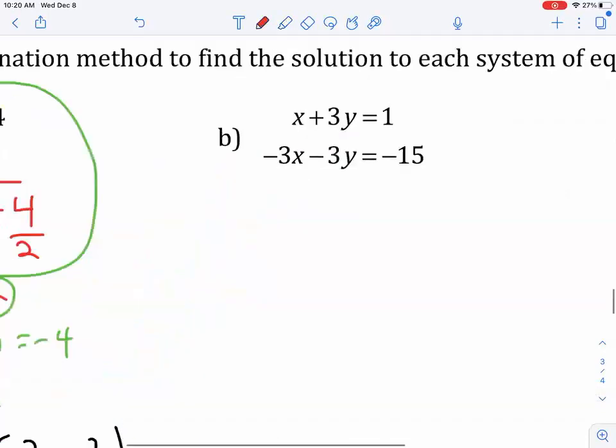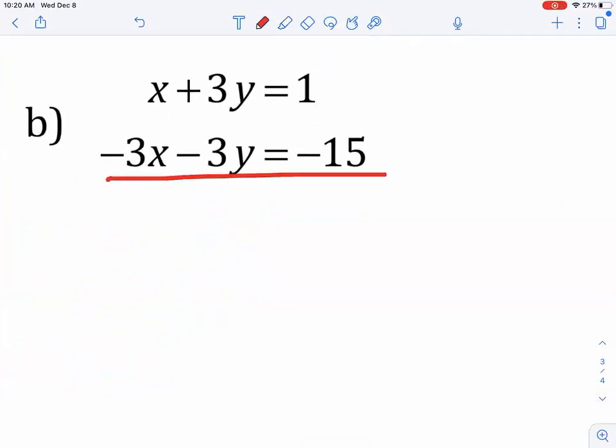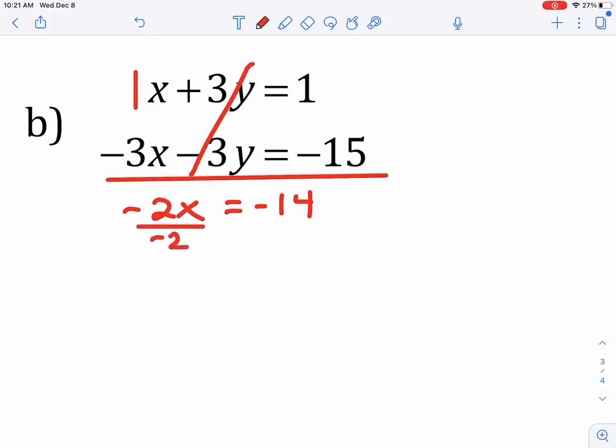So, I'm going to add those two equations down. So, 1X minus 3X would be negative 2X. My Ys are going to cancel. And 1 minus 15 is negative 14. So, I've eliminated the Ys. Now, we divide by negative 2, and we have half our answer. So, X comes out to be 7. Positive 7. Remember, negative divided by negative, positive 7.